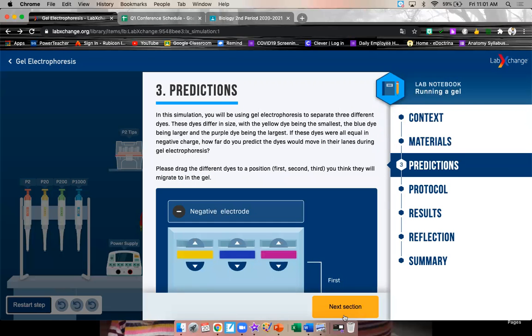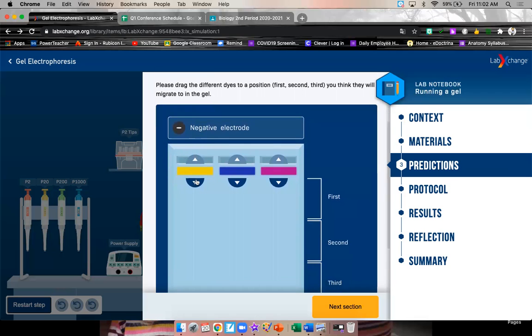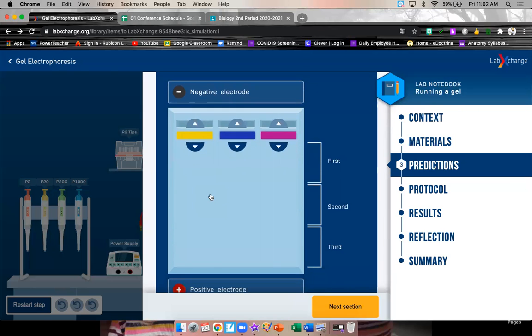So predictions. In this simulation, you will be using gel electrophoresis to separate three different dyes. These dyes differ in size, with the yellow dye being the smallest, the blue dye being larger, and the purple dye being the largest. If these dyes were all equal in negative charge, how far do you predict the dyes would move in their lanes during gel electrophoresis? I am not going to do this for you. At this point, you are going to do your own prediction. So first, second, third. Remember that yellow is the smallest one.